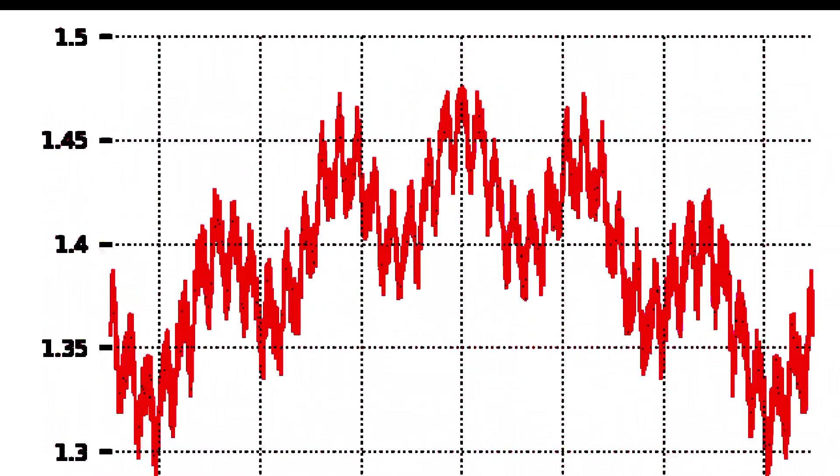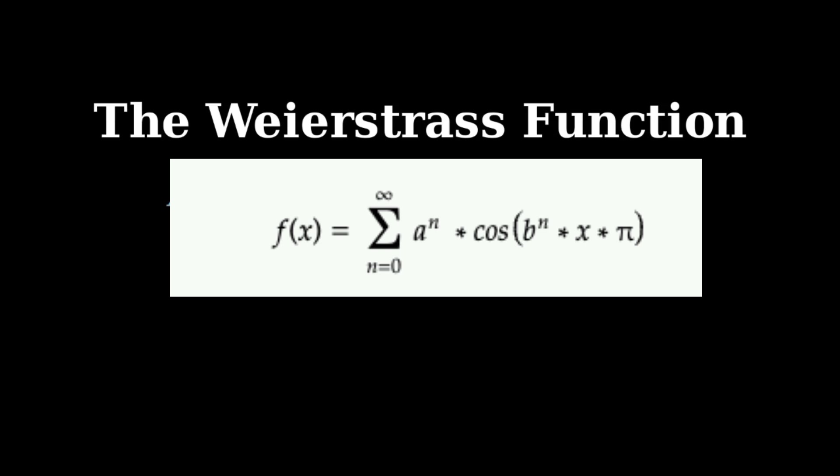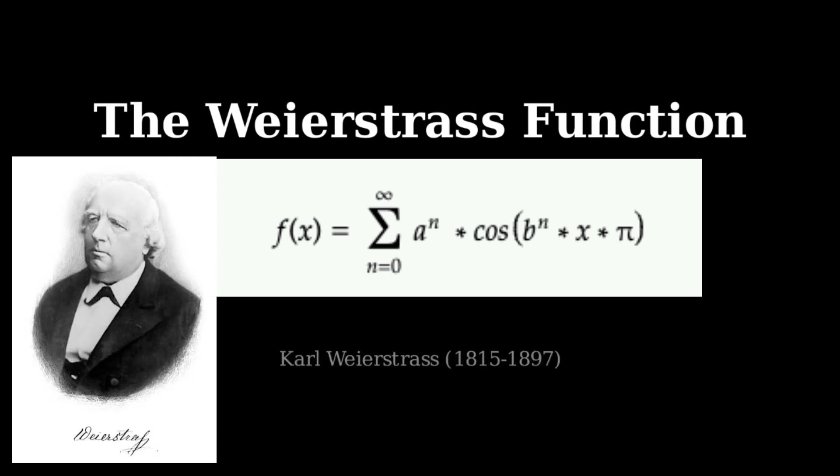The function is defined as f(x) equals the sum from n equals 0 to infinity of a to the power n times cosine of b to the power n times pi x. Created by Karl Weierstrass in 1872, this function would prove that mathematics still held shocking surprises.